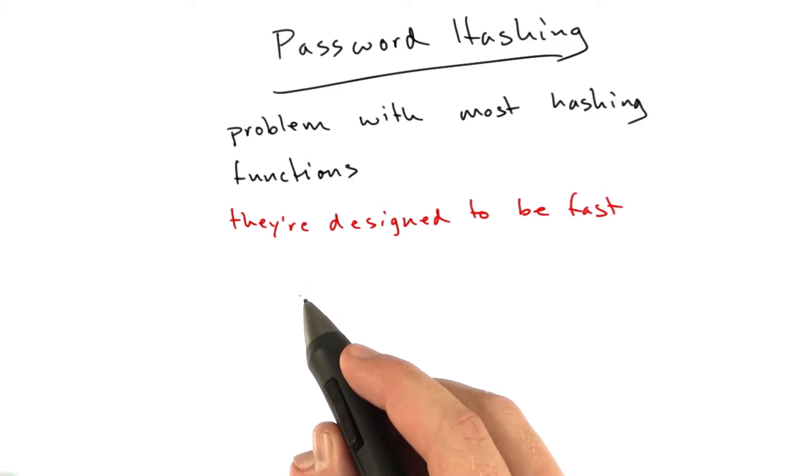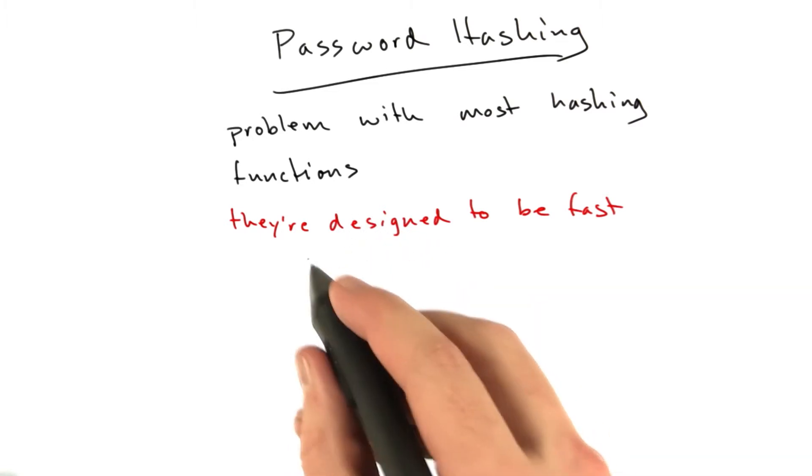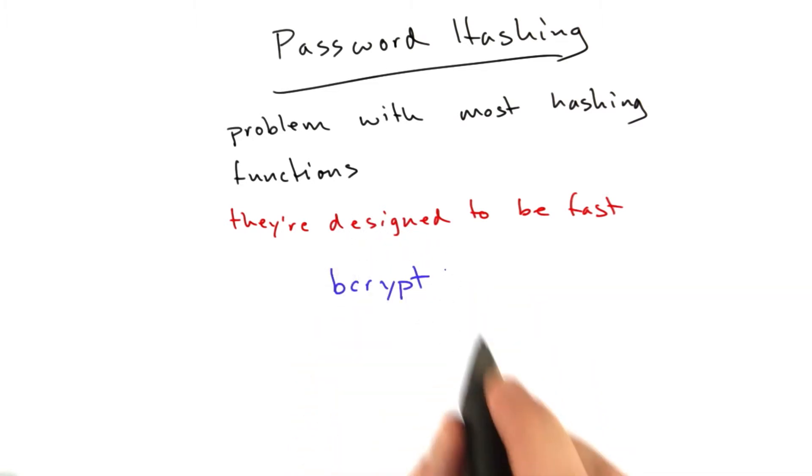So that as computers get faster and faster, the hash function stays the same speed. And I'm about to tell you about such a function. It's called bcrypt.